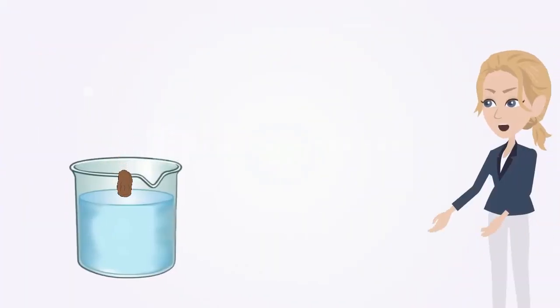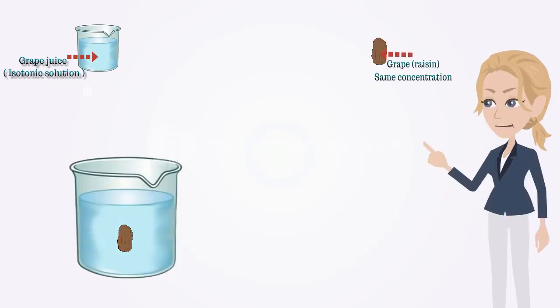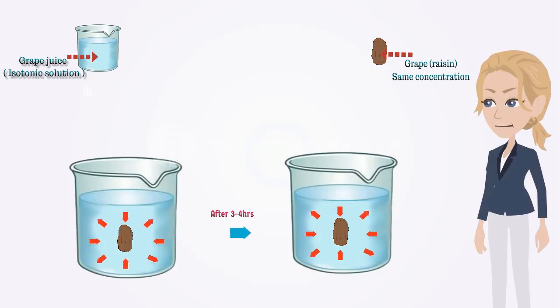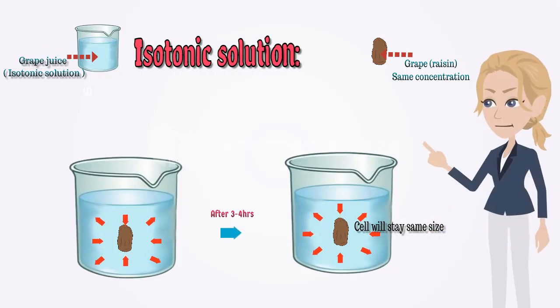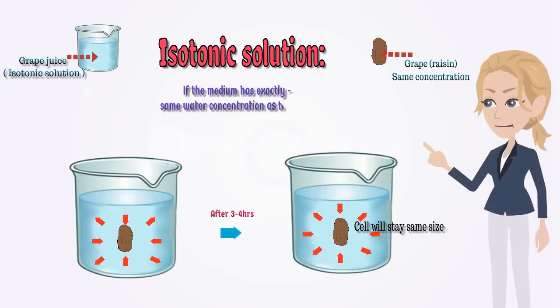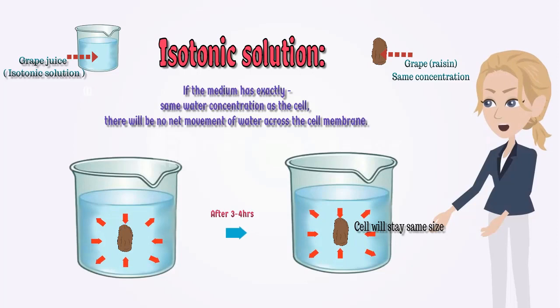When the raisin is placed in grape juice, which is an isotonic solution, water crosses the cell membrane in both directions, but the amount going in is the same as the amount going out. So there is no overall movement of water and the cell will stay the same size. From this we came with the concept of isotonic solution. If the medium has exactly the same water concentration as the cell, there will be no net movement of water across the cell membrane. Such a solution is also known as an isotonic solution.